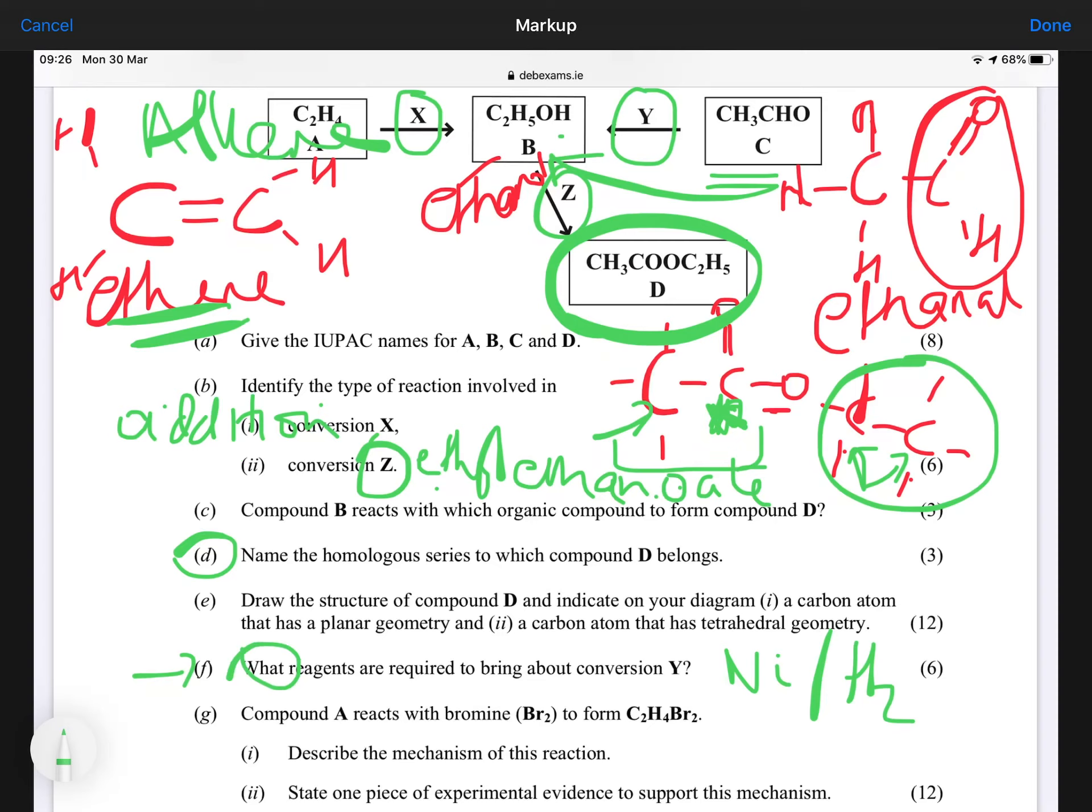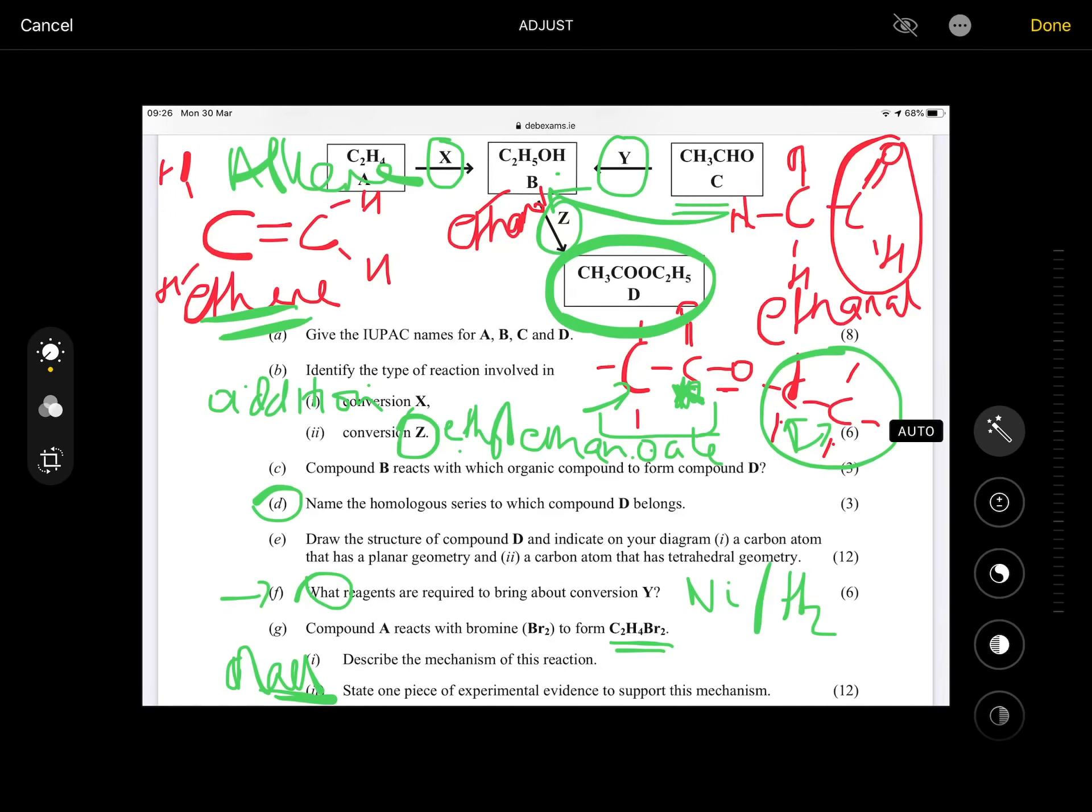Now, compound A reacts with bromine to form your 1,2-dibromoethane. They want you to describe the mechanism. So you're describing the mechanism there between ethene and bromine forming 1,2-dibromoethane. And then finally, they want you to do one piece of experimental evidence to support this mechanism. So again, like in the previous question there, you'd be saying that when you add sodium chloride, remember sodium chloride with the bromine and the ethene, that you form your 1-bromo-2-chloroethane and your 2-bromoethanol.